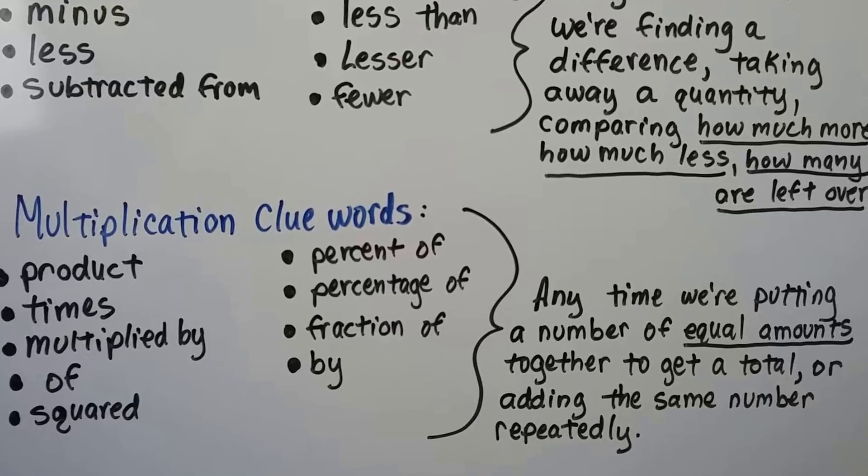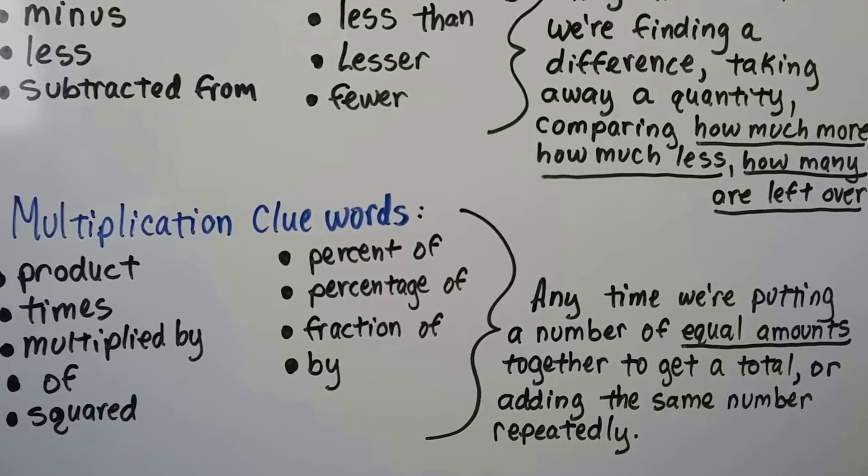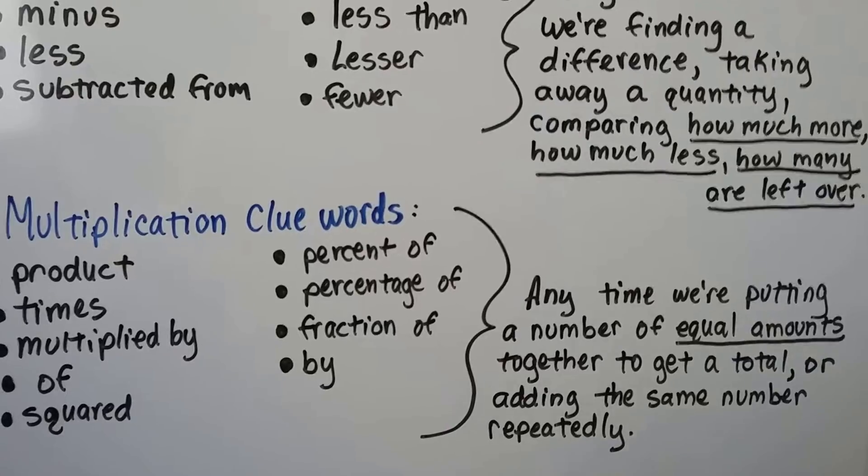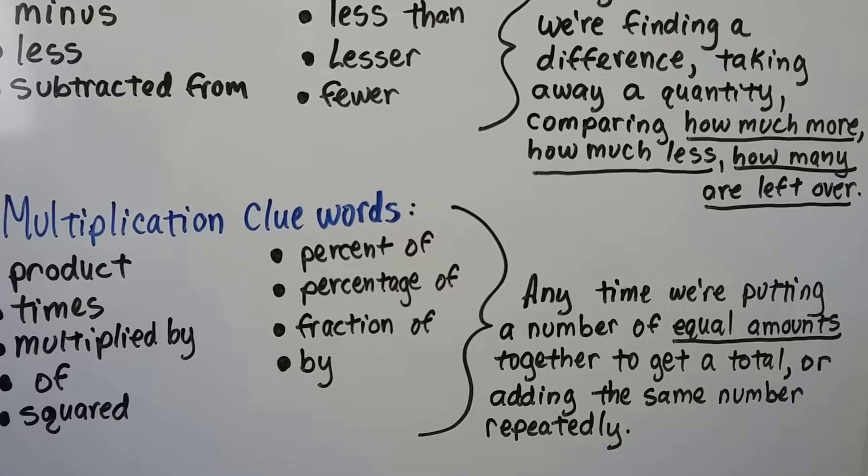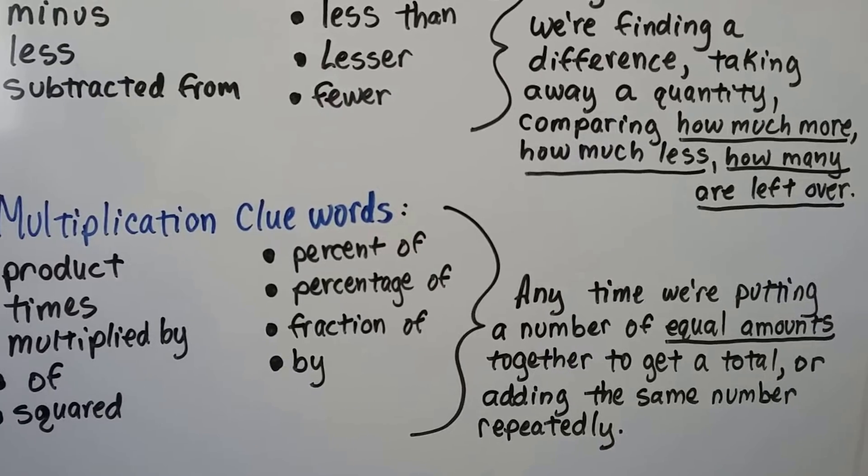You might also see percentage of, percent of, fraction of, and by. That's any time we're putting a number of equal amounts together to get a total or adding the same number repeatedly.